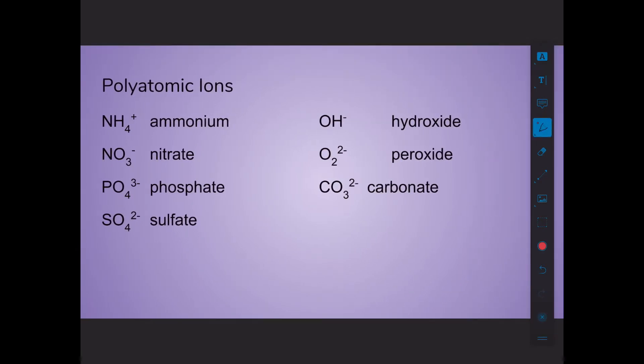Some common polyatomic ions you should be familiar with include ammonium, nitrate, phosphate, sulfate, hydroxide, peroxide, and carbonate. These stay together during reactions and always act as one giant clump. You don't need to memorize these — they're provided on your pink sheets for tests — but it's useful to be familiar with them for classwork and homework.